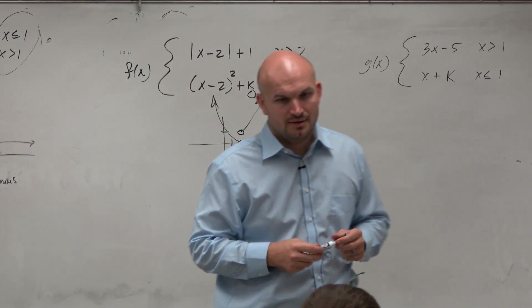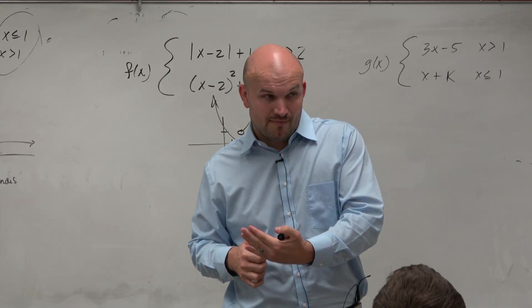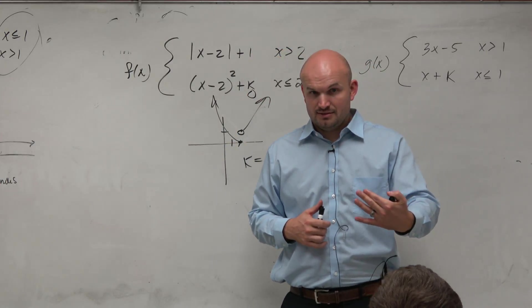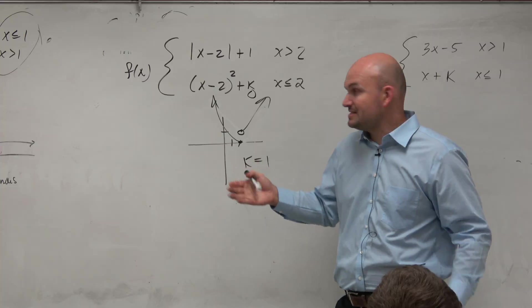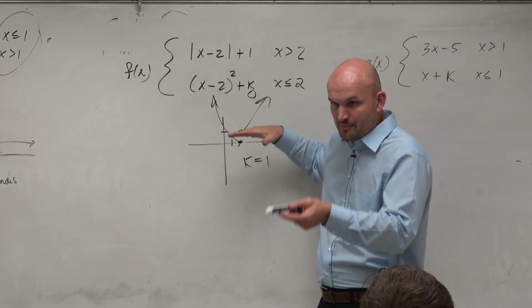So you can graph them, but I'm going to show you the algebraic method to get to this. I'm using the graphical for it to make sense, because when k is equal to 1, you're just shifting that up 1. Yes?